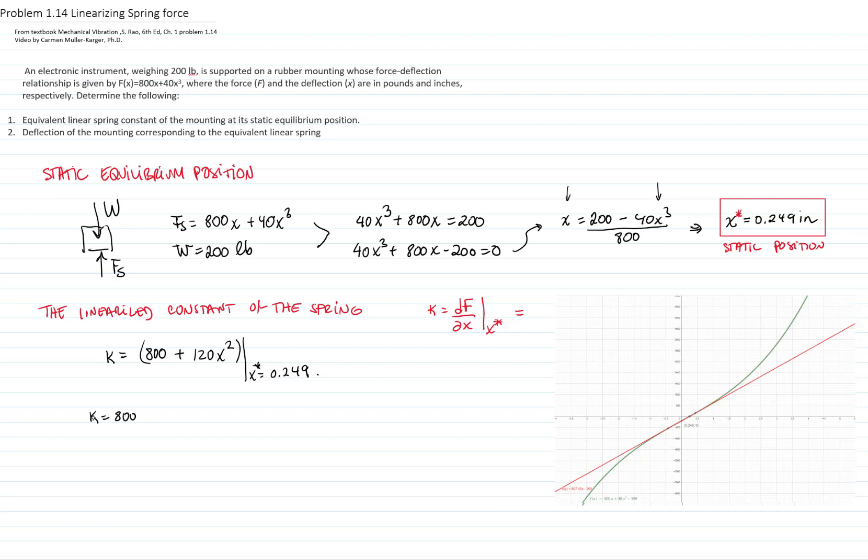If we evaluate this expression, k equals 800 plus 120 times 0.249 squared, we get that k equals 807.45 pounds per inch. And this is this line, which is the slope of the function f(x).